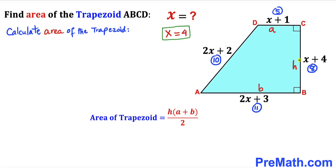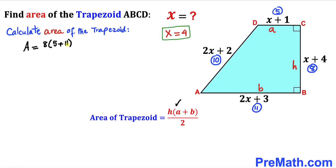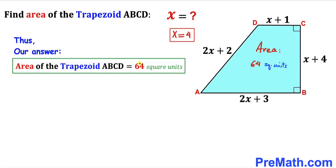In our case the height h is 8, and the two bases are a equals 5 and b equals 11. Filling in the formula: Area equals 8 times (5 plus 11) divided by 2, which is 8 times 16 divided by 2, giving us an area of 64 square units. So the area of trapezoid ABCD is 64 square units.